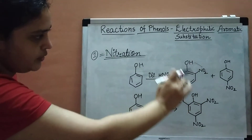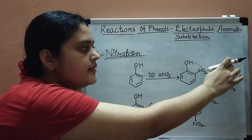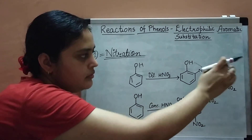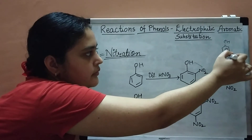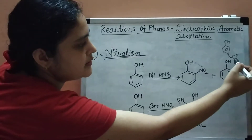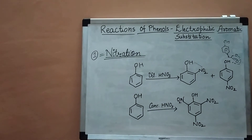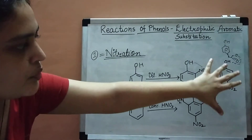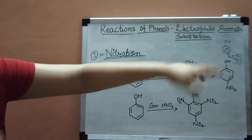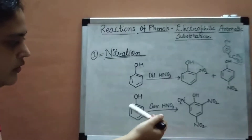Intramolecular means within the same molecule. In the case of para-nitrophenol, the hydrogen makes hydrogen bonds with another para-nitrophenol molecule — this is intermolecular hydrogen bonding. Because para-nitrophenol molecules are associated with each other through intermolecular hydrogen bonding, it is less volatile. Ortho-nitrophenol has only intramolecular hydrogen bonding and is not associated with other molecules, so it is more volatile and evaporates more easily.